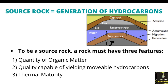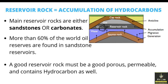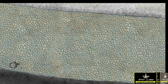Reservoir rock is basically where the accumulation of hydrocarbons occurs. It might be sandstone or carbonates. More than 60% of the world's reserves are from sandstone reservoirs. A good reservoir rock must be porous, permeable, and contain hydrocarbons. As shown in this video, these are the pores where the hydrocarbons migrate from the source rocks to the reservoir rock — this is the migration process.